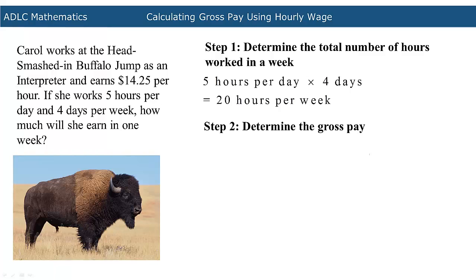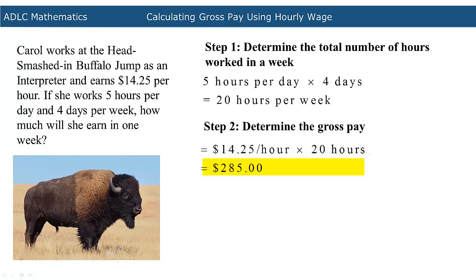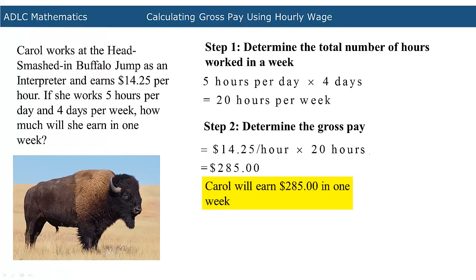The next step in calculating gross pay is to use the number of hours worked per week to determine the gross pay. To do this, we multiply the rate of pay per hour by the number of hours per week we previously calculated. When we multiply the rate of pay, $14.25 per hour, by the number of hours per week, 20, this amounts to $285. This means that Carol will earn $285 in one week.